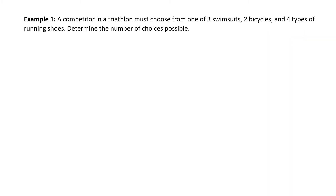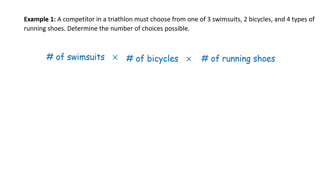Example: a competitor in a triathlon must choose from one of three swimsuits, two bicycles, and four types of running shoes. Determine the number of choices possible. Using the Fundamental Counting Principle, we take the number of swimsuits — three — multiplied by the number of bicycles — two — multiplied by the number of types of running shoes — four. Three times two times four equals twenty-four. The competitor has 24 different combinations from which to choose.